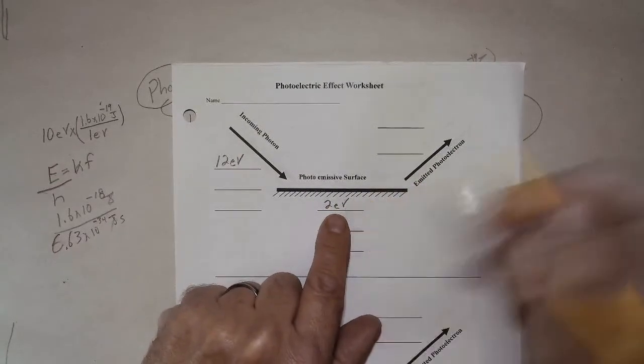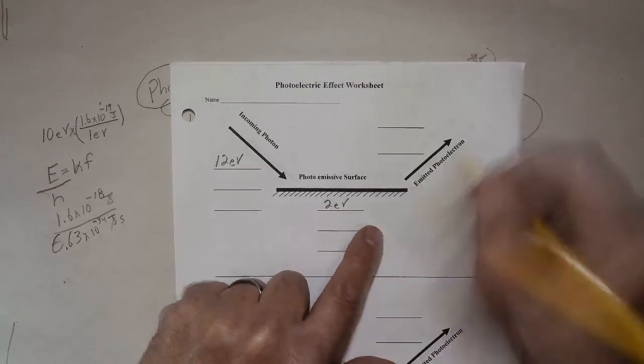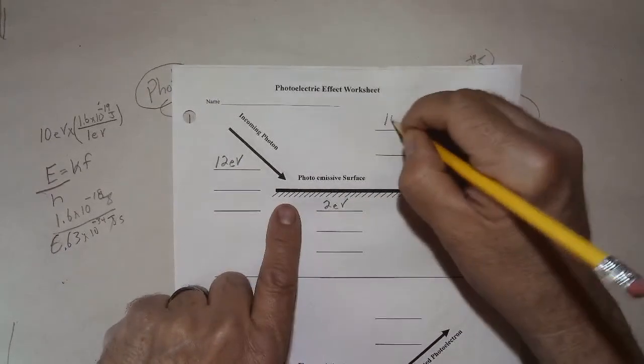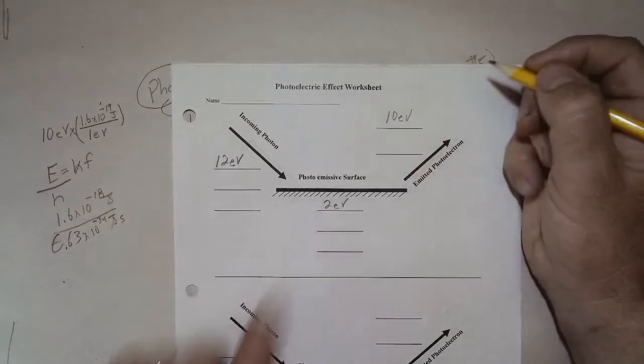That's the work function, and the emitted photoelectron, you can see how much energy is that going to have? That's going to have 10 electron volts worth of energy.